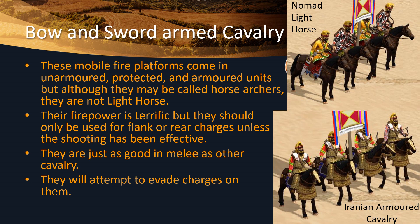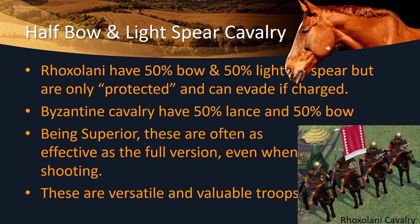Bow and sword-armed cavalry are also quite flexible. These are mobile fire platforms — basically not meant to get into combat until they've shot up their opponents, and they do shoot up things quite well. Once they get into melee they can be just as good as other cavalry because they've got swords. Just like light spear-armed cavalry, they will evade if charged. There is also an intermediate troop type with half bow and half light spear, or half bow and half lance. These are really good troops — they behave like they have 100% of each, probably because they're superior, and superior improves your shooting as well as your fighting power. If you can get these in your army, they are versatile and valuable troops.